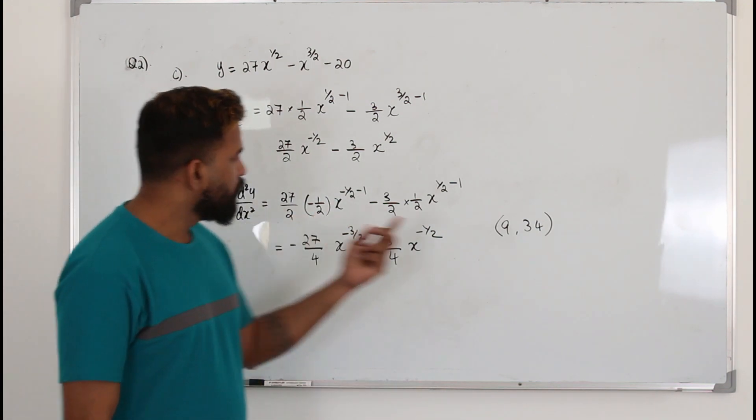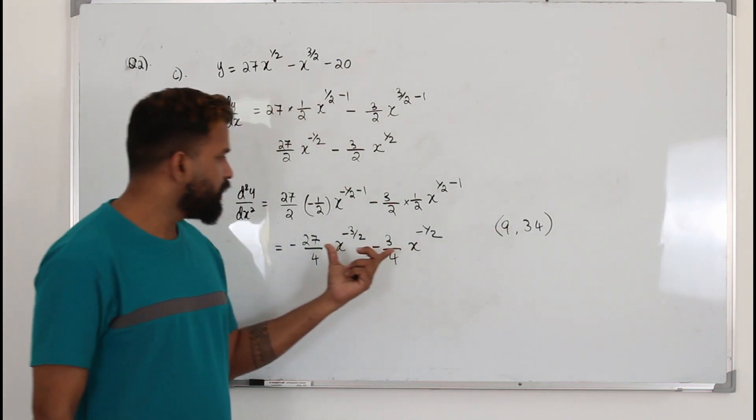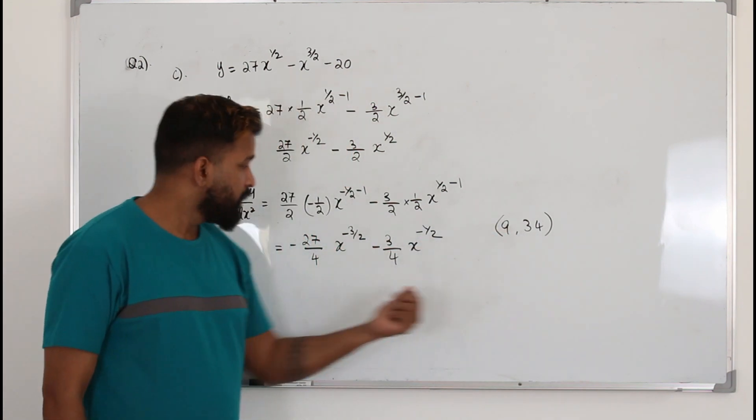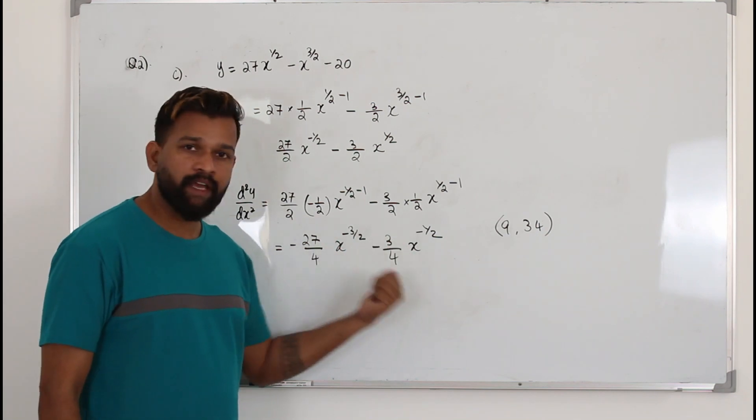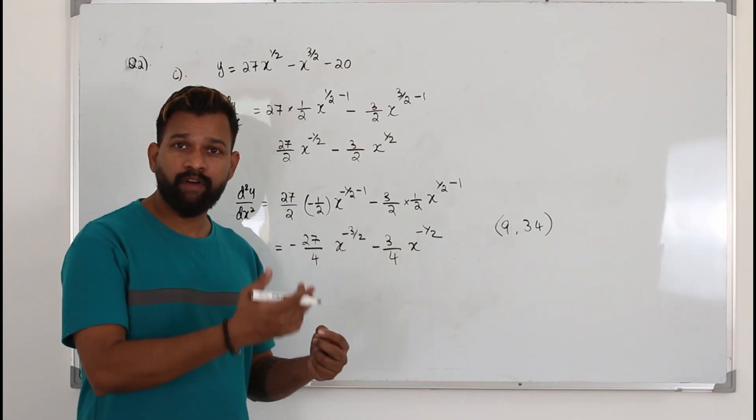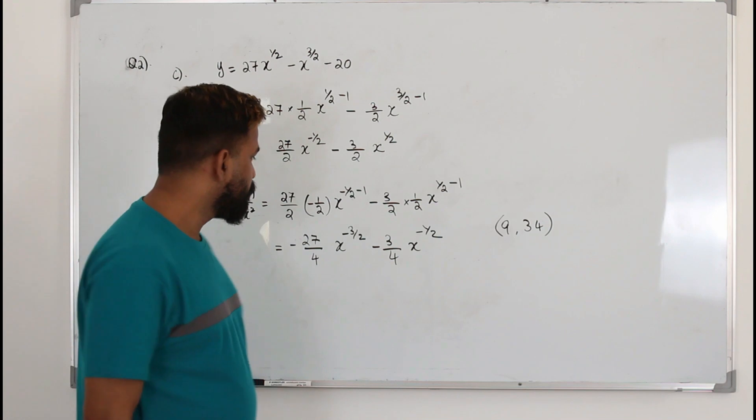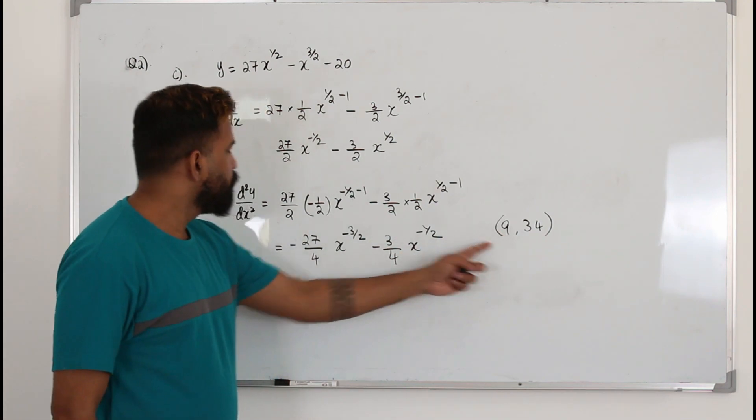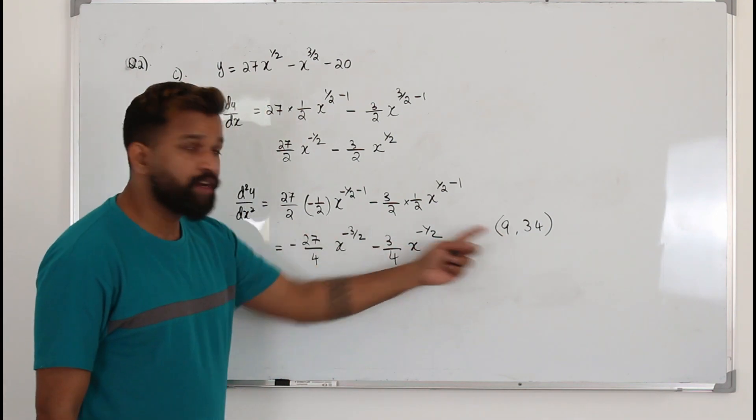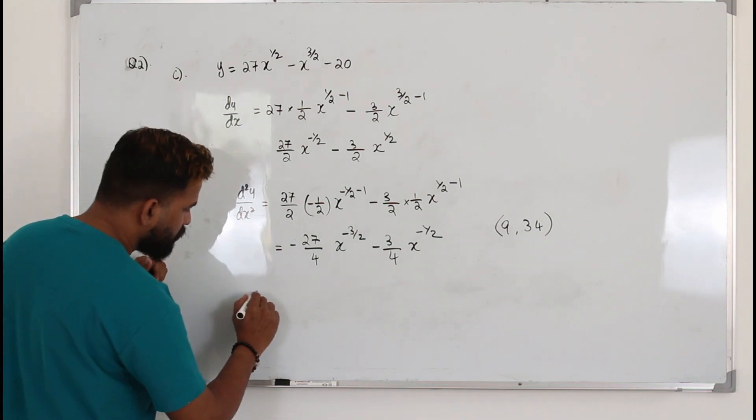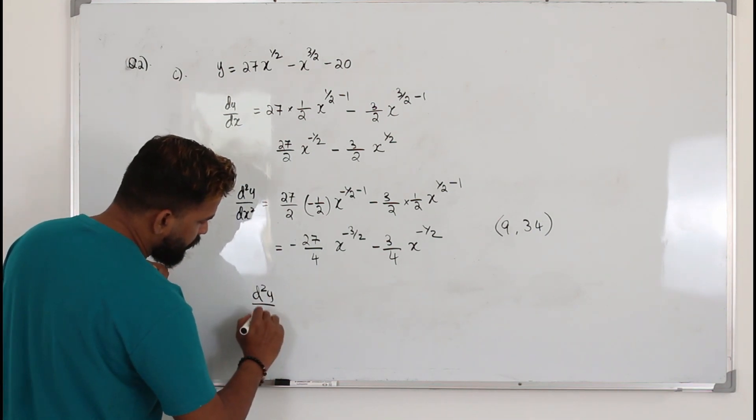Now you have to plug in the x coordinate of the stationary point into the second derivative and check what happens here. Whether you get a positive number, 0, or a negative number. So now we are going to substitute the x coordinate of the stationary point into the second derivative. So d square y by dx square.